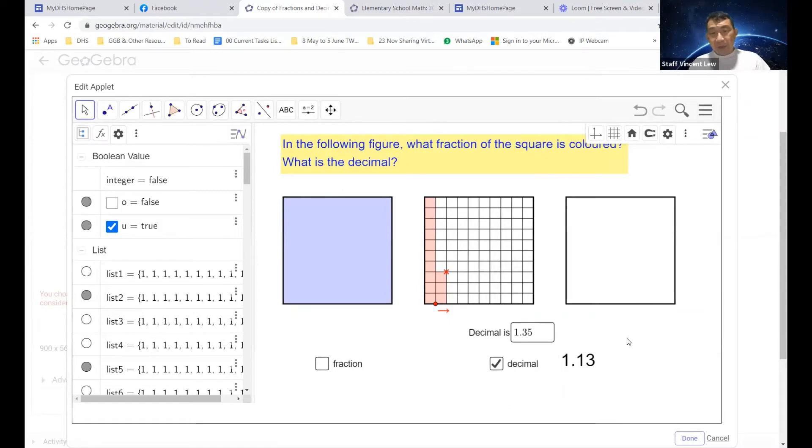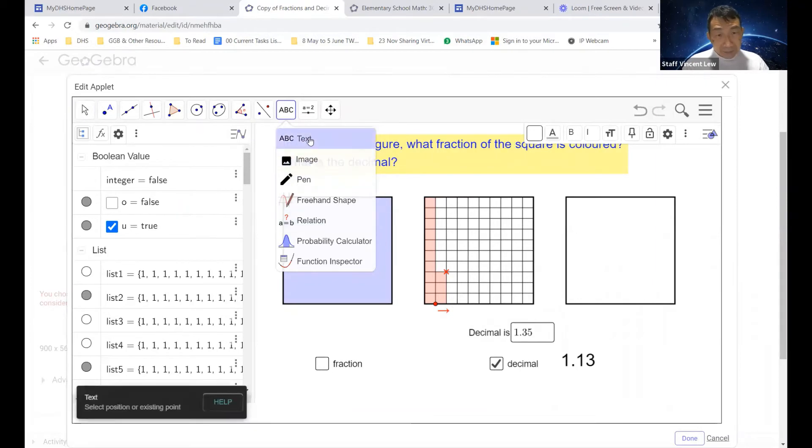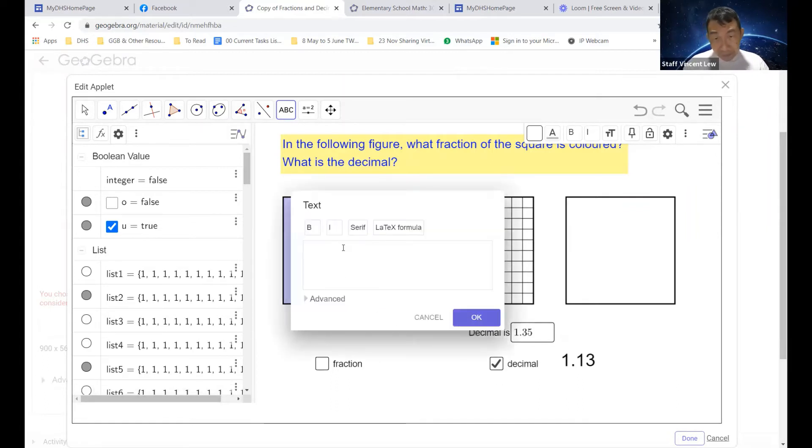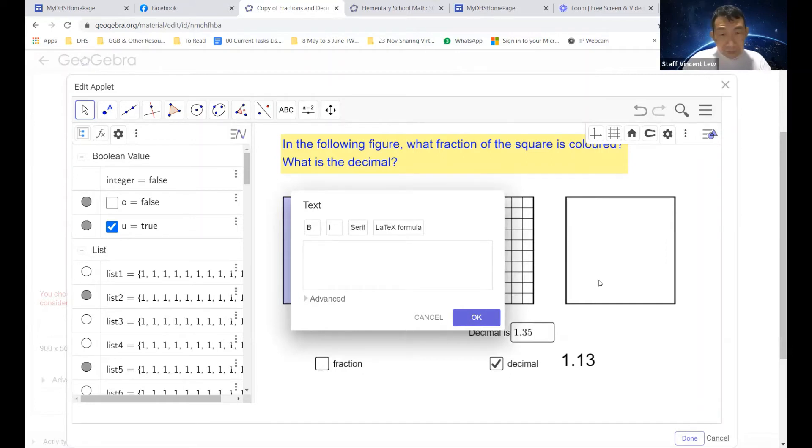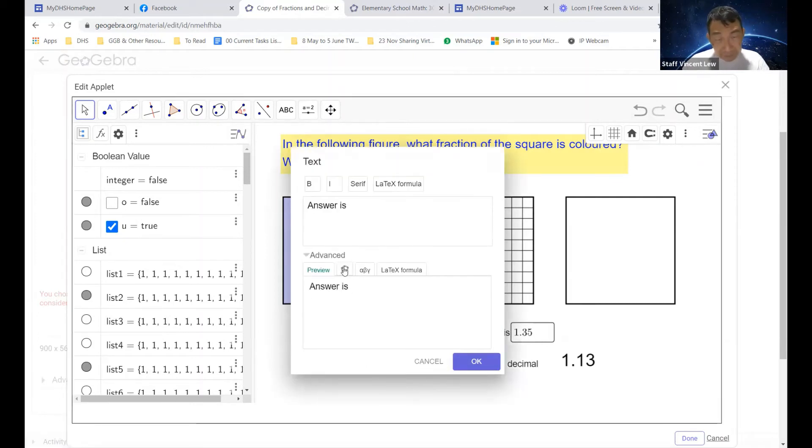So let's click OK. So what we need right now is actually the text box that gives a feedback. Click on ABC text and click it just below here.